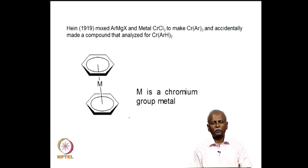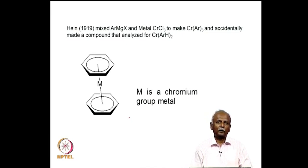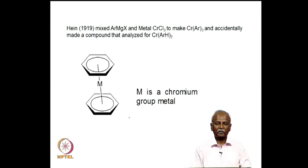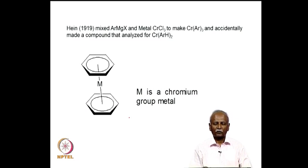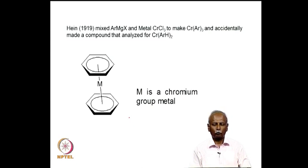The first time someone made a sandwich complex, although not intentionally, was as early as 1919, and that is when Heine mixed a Grignard reagent and chromium trichloride. He isolated a compound that analyzed for bisbenzene chromium. There are a lot of complexes where the two arene rings or the pi layers are surrounding a metal atom. The metal atom happens to be in the chromium metal series, and we will see a little later why it is stable when you have the chromium group metal atom in between the two sandwich slices.